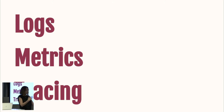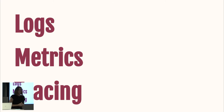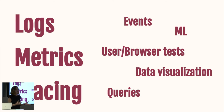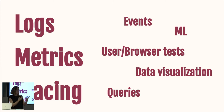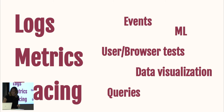So how do we start getting that information back from our system? Most people start with logs, metrics, and tracing. But it can be anything that helps you understand your system better — events (like when you deploy code to production), ML or data visualizations, browser testing, user testing, and queries. All of this can improve observability in your system.